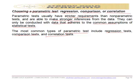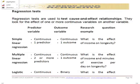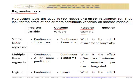The most common parametric tests include regression tests, comparison tests, and correlation tests. Regression tests are used to test cause-and-effect relationships, meaning they are the kind of test we use in experimental research. They look at the effects of one or more continuous predictor variables on an outcome variable. When the outcome variable is continuous and the predictor variable is also continuous, we use regression — for example, looking at the relationship between income and a continuous outcome variable.